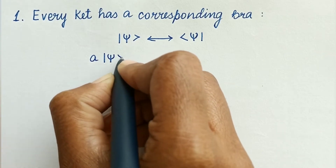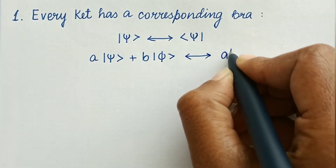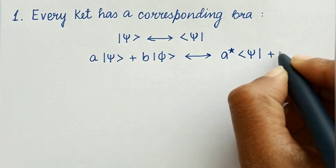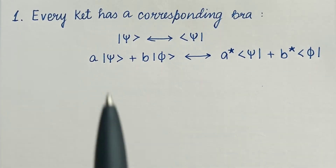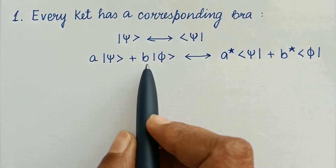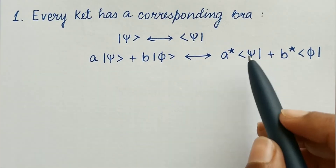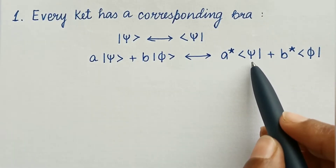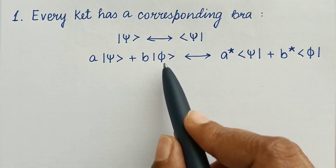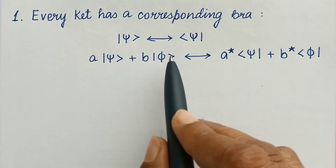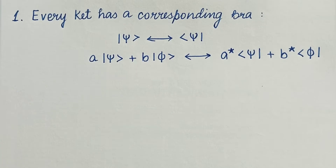Mathematically, A|ψ⟩ + B|φ⟩ gives A*⟨ψ| + B*⟨φ|. Here A and B are complex numbers multiplied by the state vectors — the ket vectors. When a ket changes into a bra, the complex numbers are changed into their conjugates. So there is a one-to-one correspondence between bras and kets.